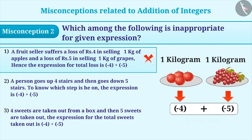Sometimes, to find the loss, the calculation is done and the statement is represented as minus 4 minus minus 5. This is an incorrect way to represent the situation. The correct way to express it is minus 4 plus minus 5.